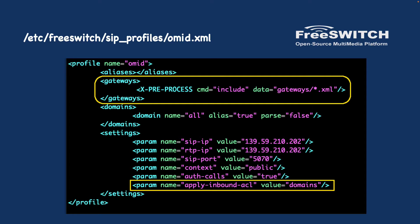Now it's time for the FreeSWITCH configuration. Gateways are added in the SIP profile. We had created the 'omit' SIP profile in the previous video — we just need to amend it and add a gateway tag to point to the gateway folder. We also apply the 'apply-inbound-ACL' tag into our profile. This is for inbound calls and will let us accept calls without authentication from any IP we put in our ACL. We add these two tags to our default profile.